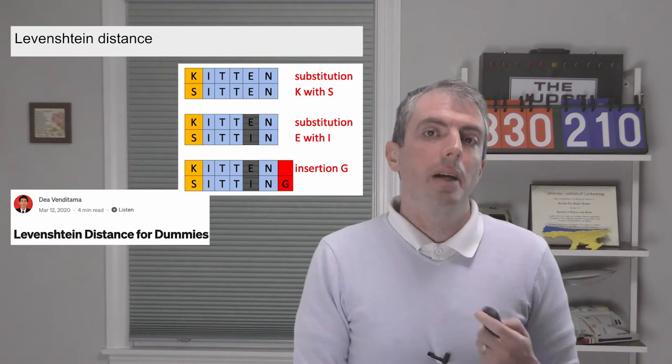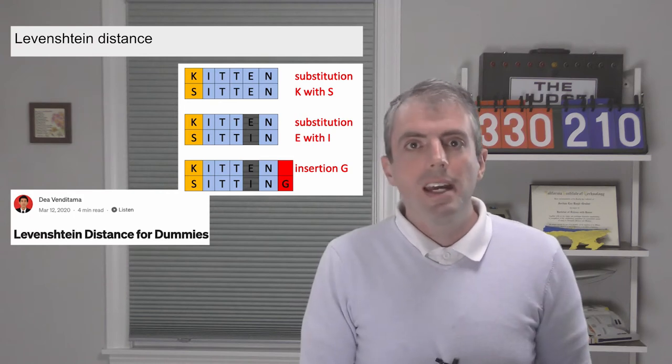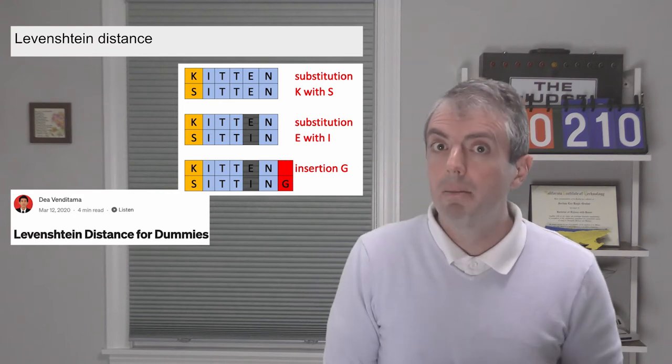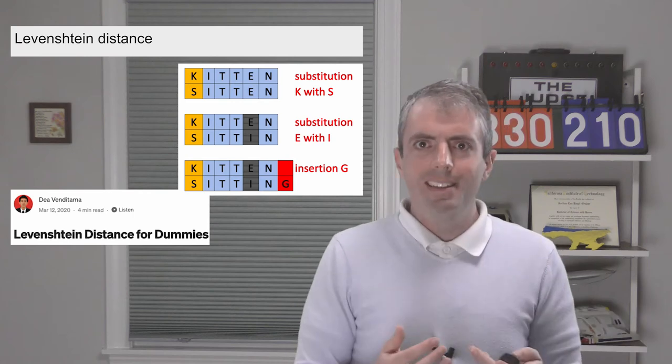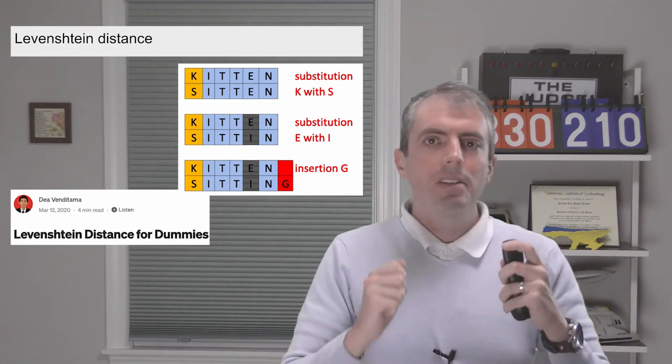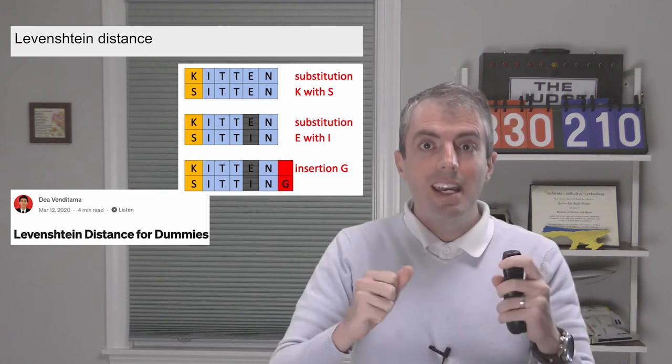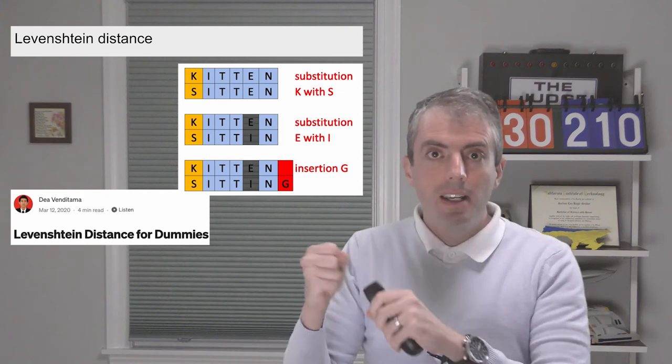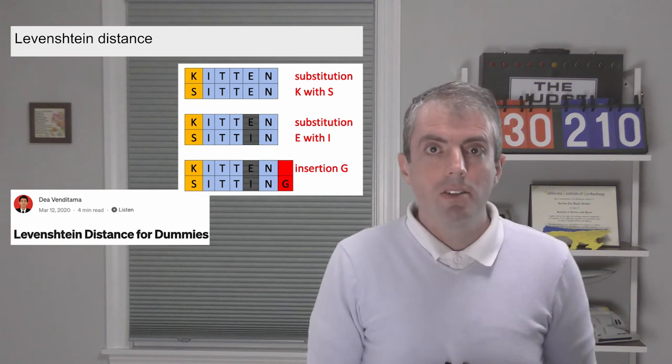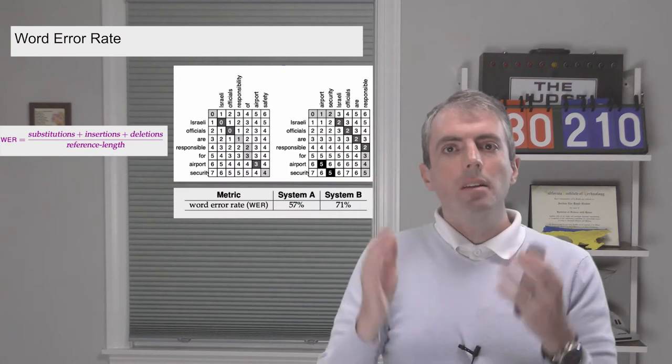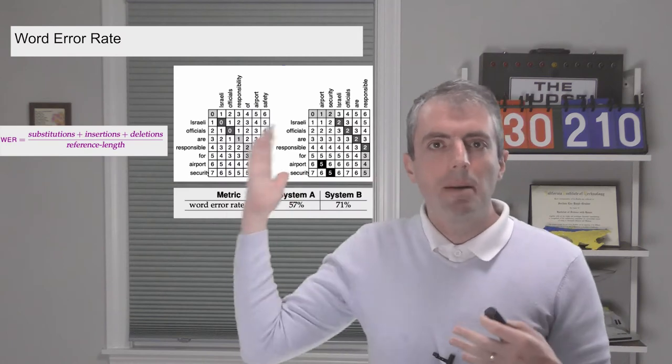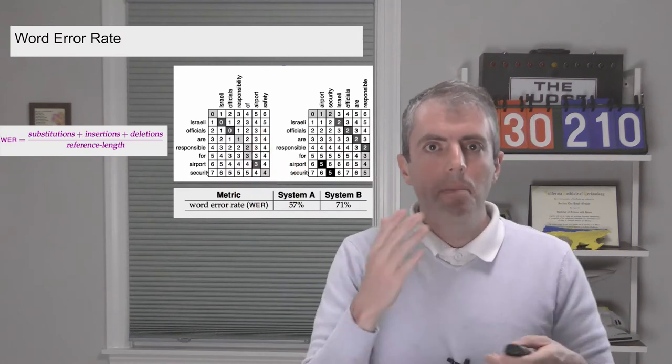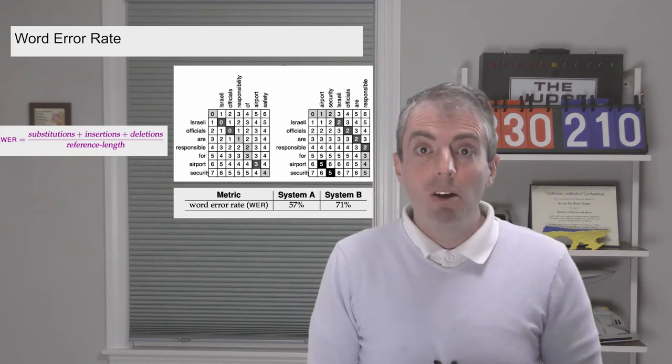Now if you've taken a computational biology course or a theory course, another obvious solution comes immediately to mind. Let's use edit distance. How many substitutions, insertions, or deletions does it take to modify the reference to get to the generated translation? This gets a little more complicated because you need to build a dynamic programming table to compute the minimum number of edits, but this does account for word order.